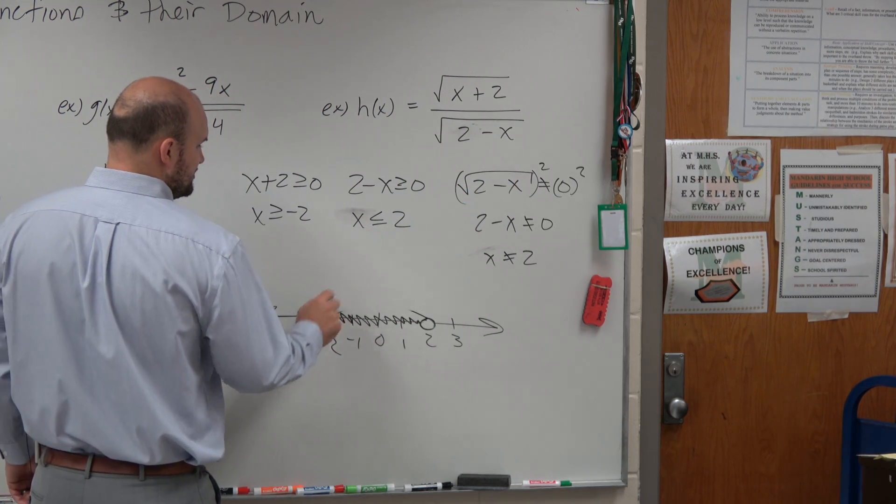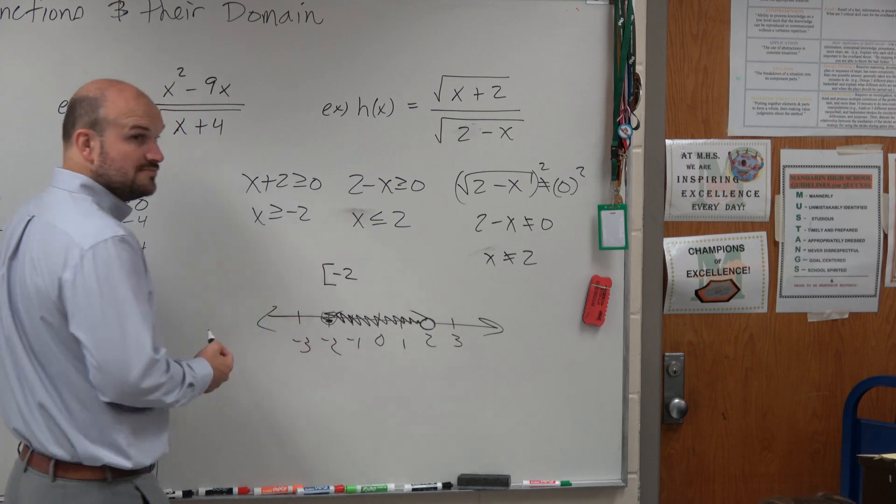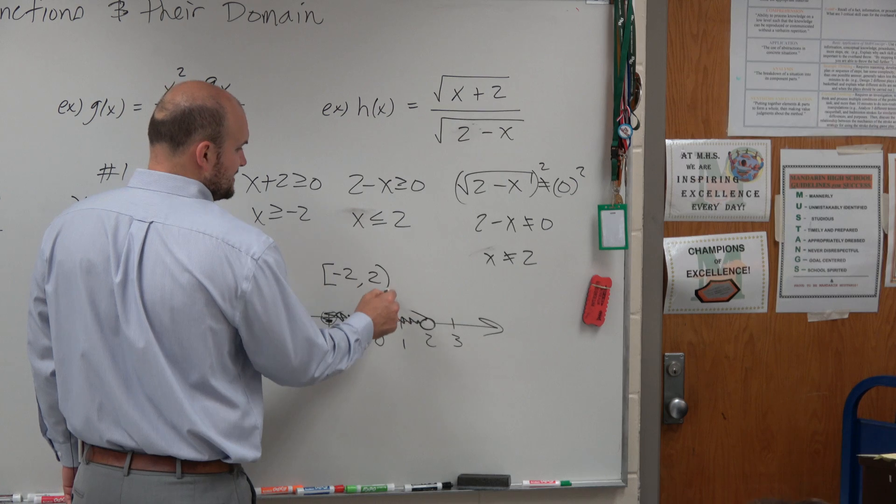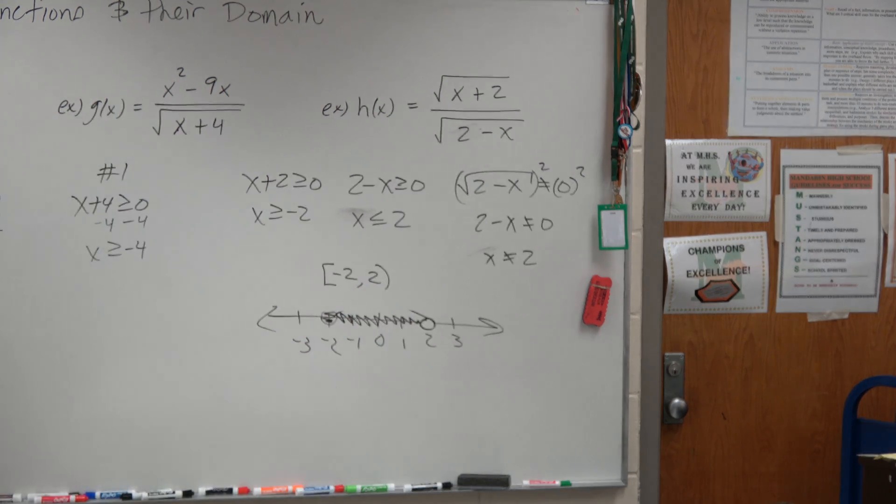So therefore, my negative 2 is contained. And that's the smallest number. And it goes up to positive 2, which is not contained. So that's a parenthesis. OK?